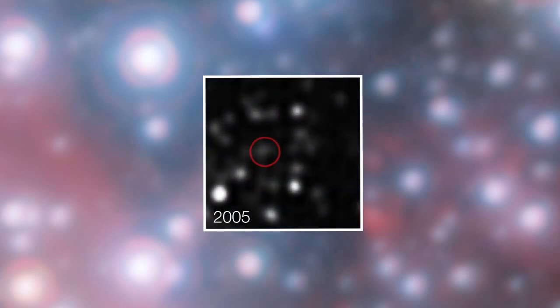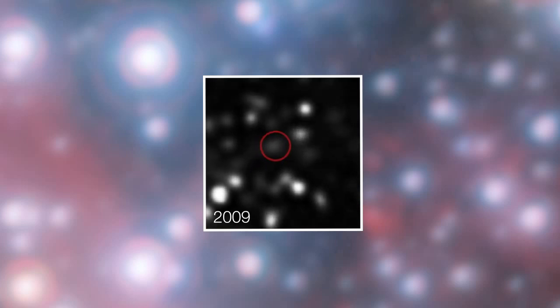These stars betray the black hole to us. While we can't see it directly, the orbits of these doomed stars tell us right where it is.